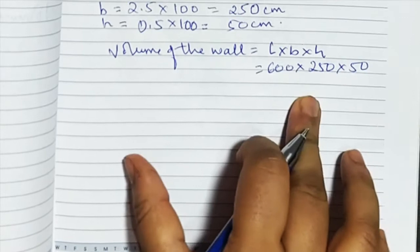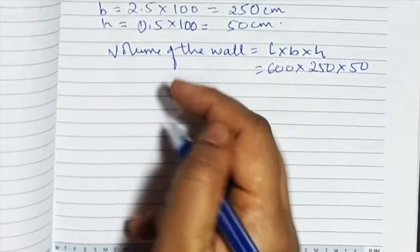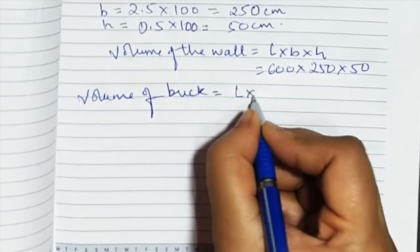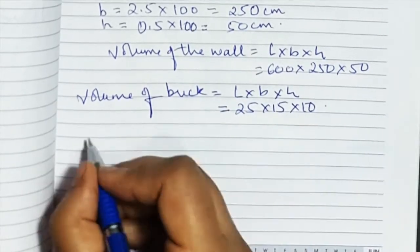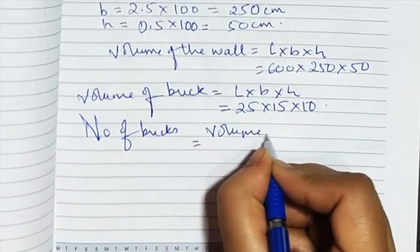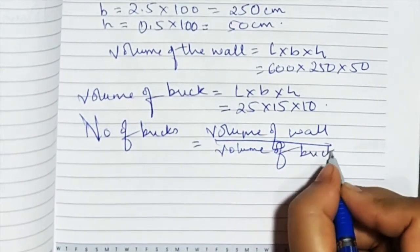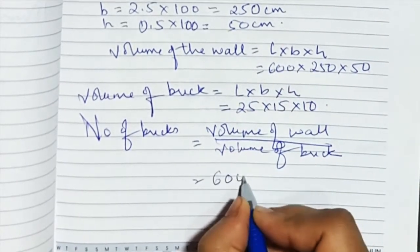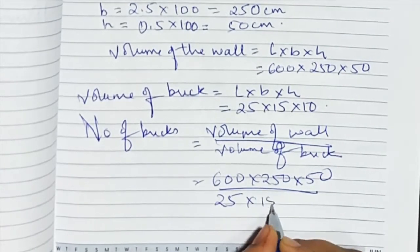We can either solve the wall volume fully and then divide by the brick volume, or keep it as is and cancel. Volume of brick = length × breadth × height = 25 × 15 × 10. Number of bricks = volume of wall ÷ volume of brick = (600 × 250 × 50) ÷ (25 × 15 × 10).